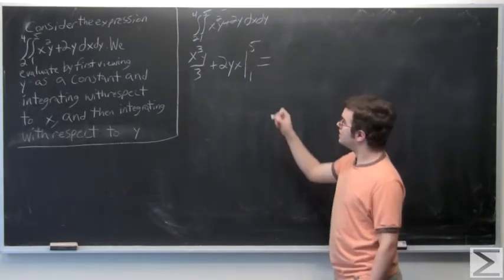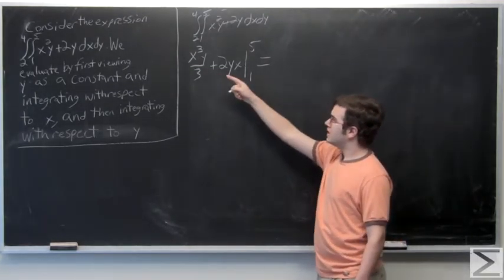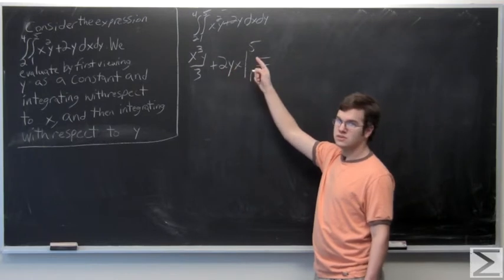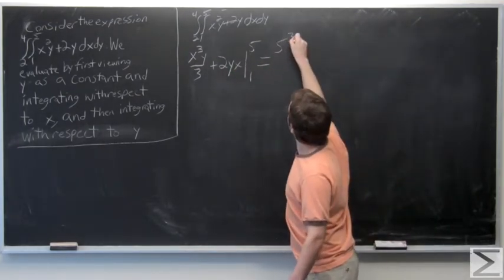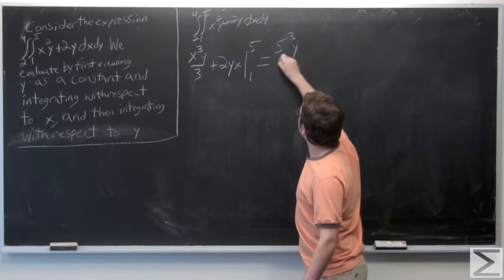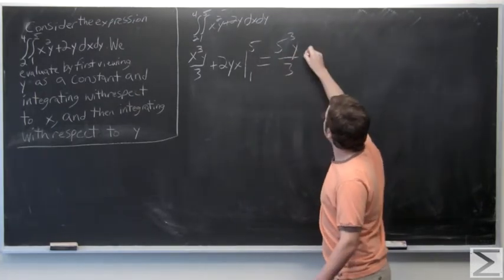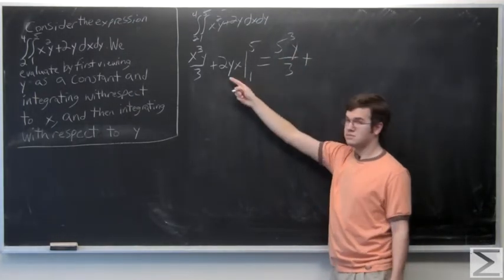And so when evaluating, we get 5 to the third y over 3 plus 5 times 2 times y, which is 10y